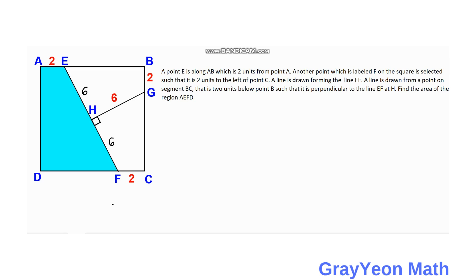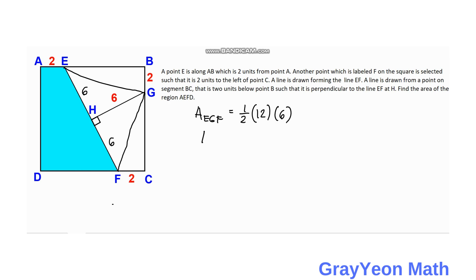Having established that the shaded area equals the unshaded area, we calculate the unshaded region. We isolate triangle EGF, which has a base of 12 units and a height of 6 units. So the area of triangle EGF equals one half times 12 times 6, which equals 36 square units.